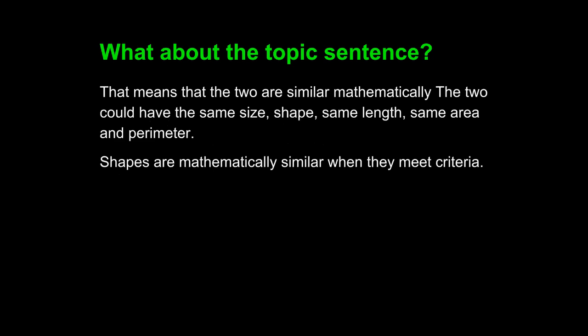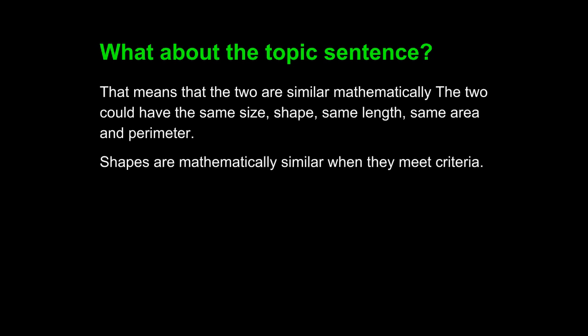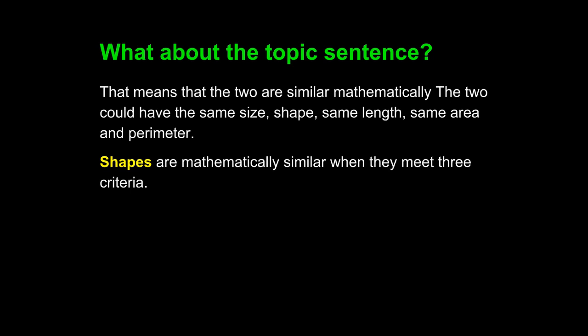We can revise into this sentence: shapes are mathematically similar when they meet criteria. How many criteria? Well, that's to be determined. We could say that shapes are mathematically similar when they meet three criteria. Shapes is a strong subject.